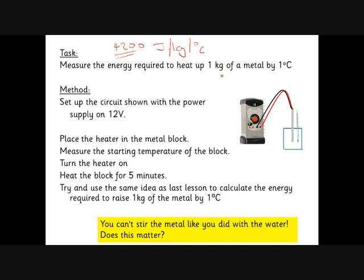We're going to try the same experiment but with a metal block — we'll try some different metal blocks — doing exactly the same experiment with one slight change: this time we're going to heat it up for five minutes. You can't stir metal, but that's not too important because metal is a good conductor, so heat will conduct through the block quite efficiently.